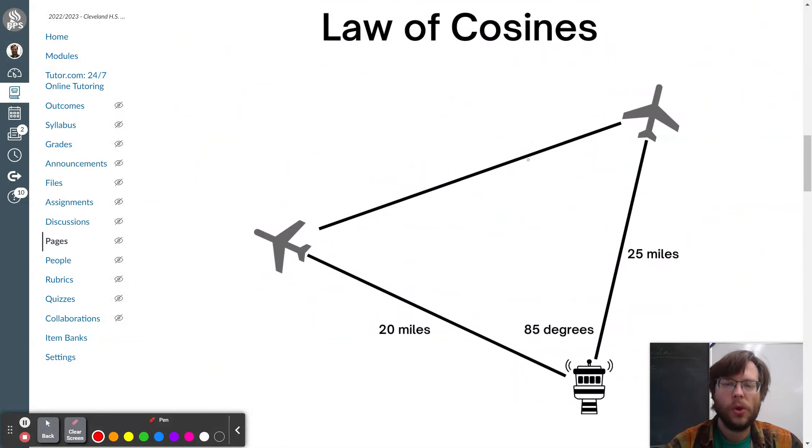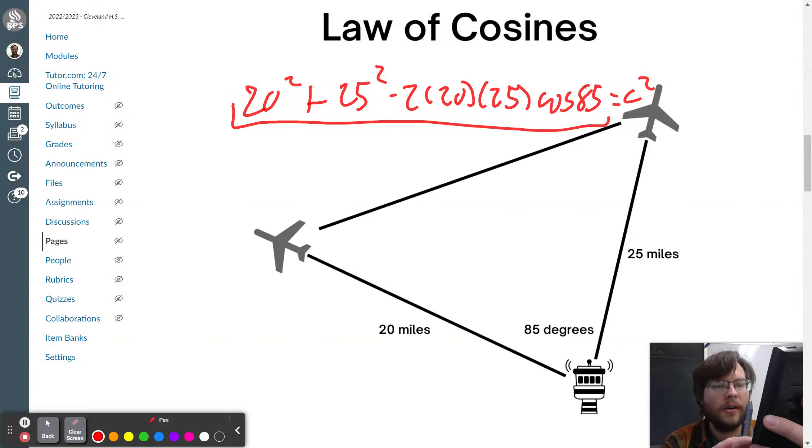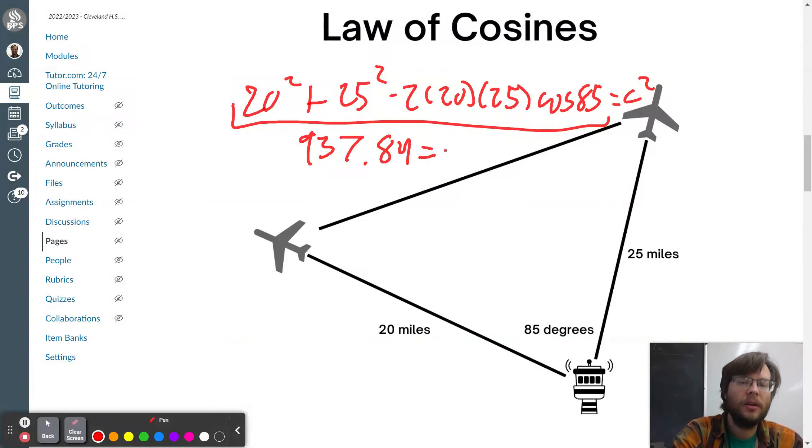A law of cosines here. We know two side lengths and the angle in between them, so I can set up a squared plus b squared minus 2ab cosine of c equals c squared. I can type in all of that fun stuff there. Type it all in, it's one long line, 937.84 equals c squared. Take the square root of that answer, and I get that the c value is about 30.62.